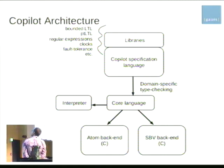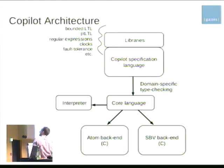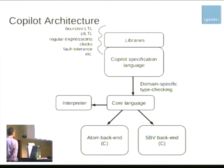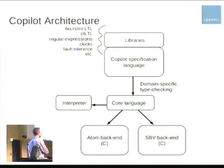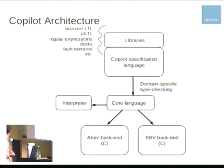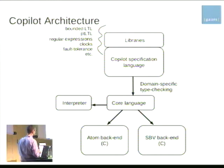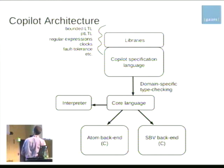From the front end, we do a little domain-specific type checking, get an explicit core representation for which we have an interpreter, and a few backends. The backends are actually also embedded domain-specific languages in Haskell. We use Tom Hawkins' Atom language as a C code generator, as well as Levent Erkök's SBV package, which is a front-end for SMT solving and also has a C code generator.